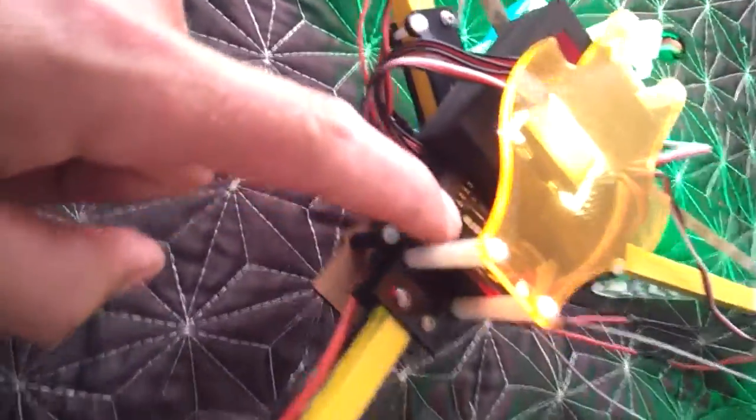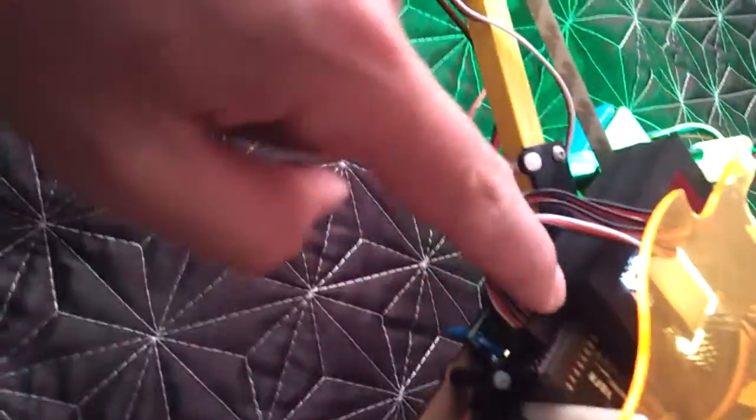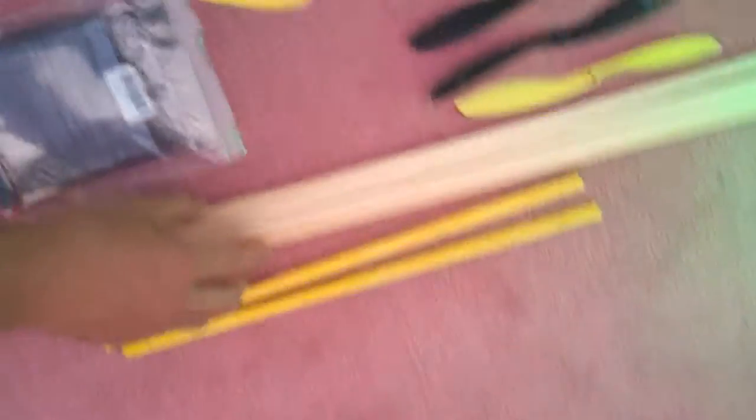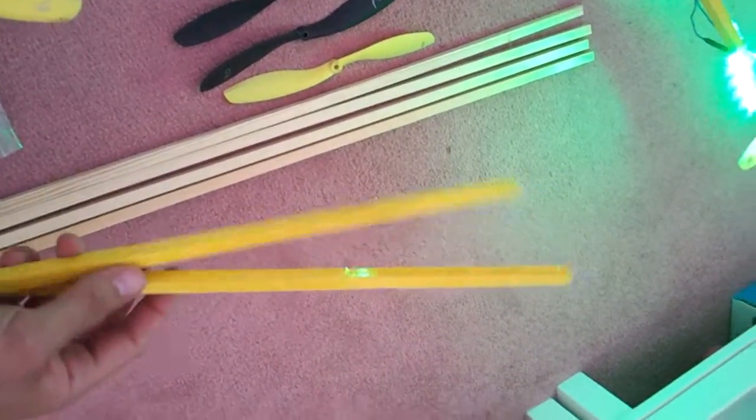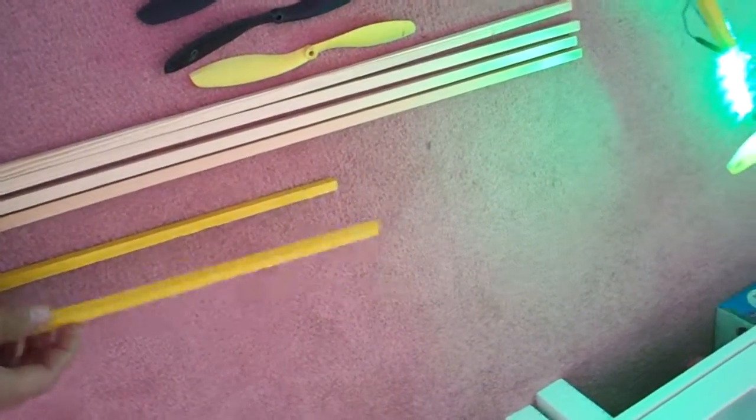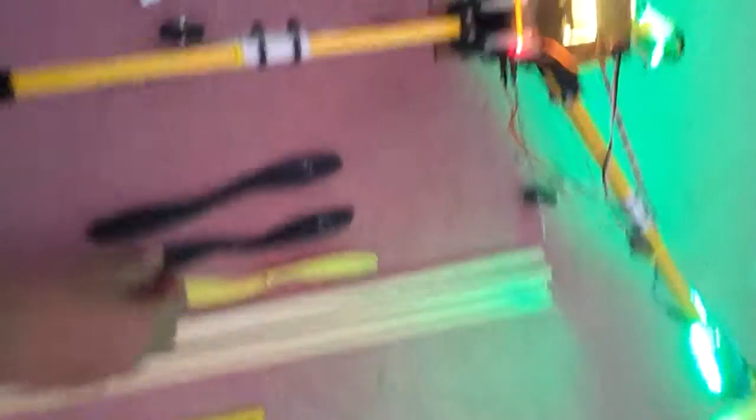I've used Flysky receiver so that's probably different if you use a Spectrum one, so I'm not gonna explain how to connect, you're gonna have to figure it out. I've got some spare arms, the balsa wood ones, not very strong but you can fly on them, some spare props.